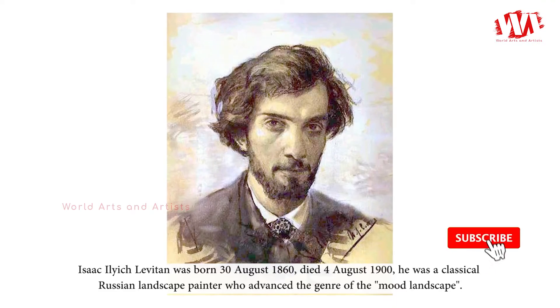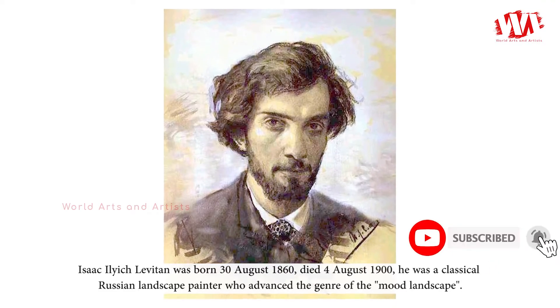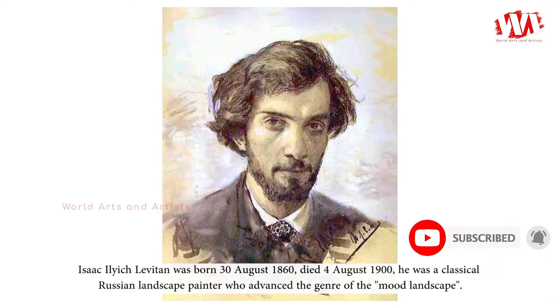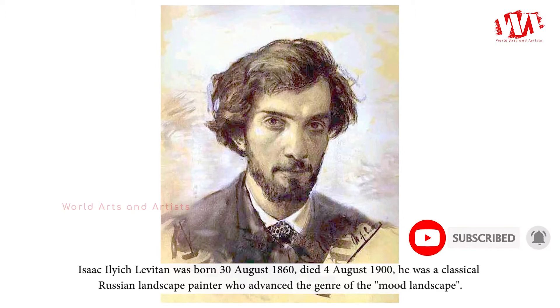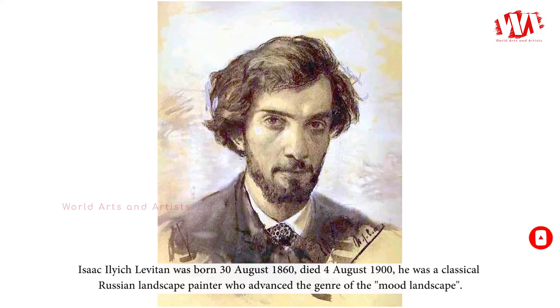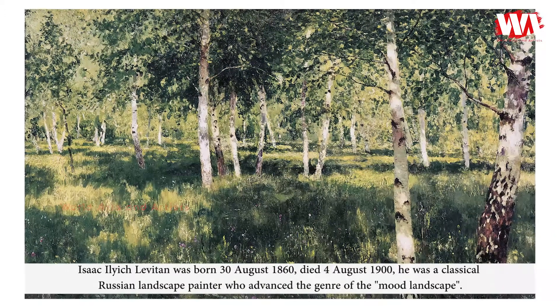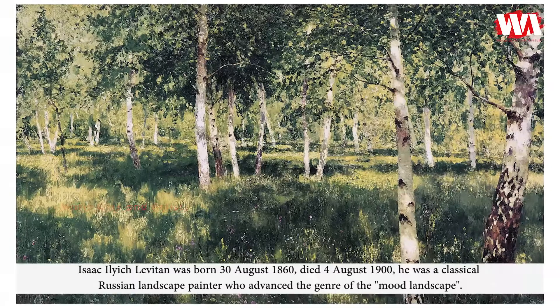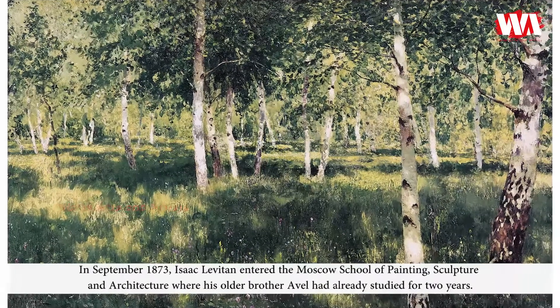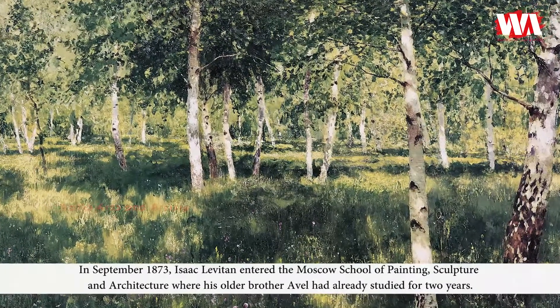Isaac Ilyich Levitan was born August 30, 1860, and died August 4, 1900. He was a classical Russian landscape painter who advanced the genre of the mood landscape. In September 1873,